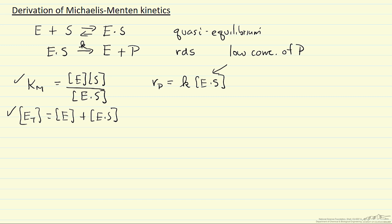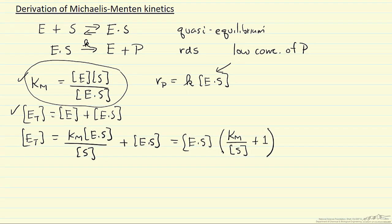If we make the substitution, that the enzyme concentration, the free enzyme concentration, would just be KM times E·S complex over substrate. So that's just rearranging this equation, and then the second term is not changed. But what I have now, I can factor out the enzyme substrate concentration. So I factored out, and I can rearrange this so I'm solving for the enzyme substrate concentration.